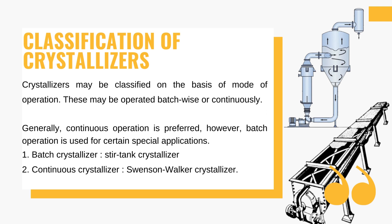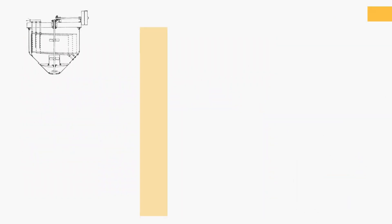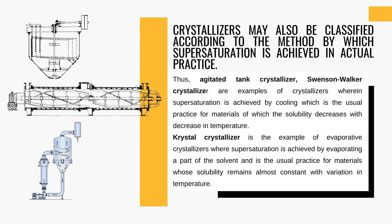Another classification of crystallizers, other than the mode of operation, is based on the method by which supersaturation is achieved. The first category includes agitated tank crystallizers and Swenson Walker crystallizers, wherein supersaturation takes place when the solution is cooled. These crystallizers are used for materials where solubility decreases with a decrease in temperature. This method is crucial for generating high-quality crystals in various industries where precise control over crystal growth is essential for product quality and uniformity.